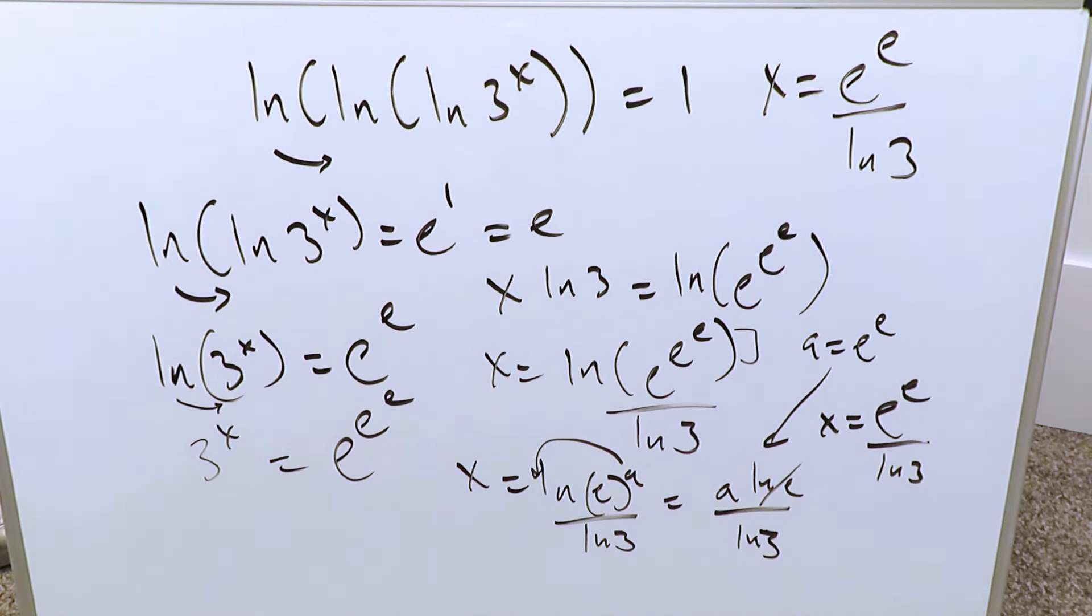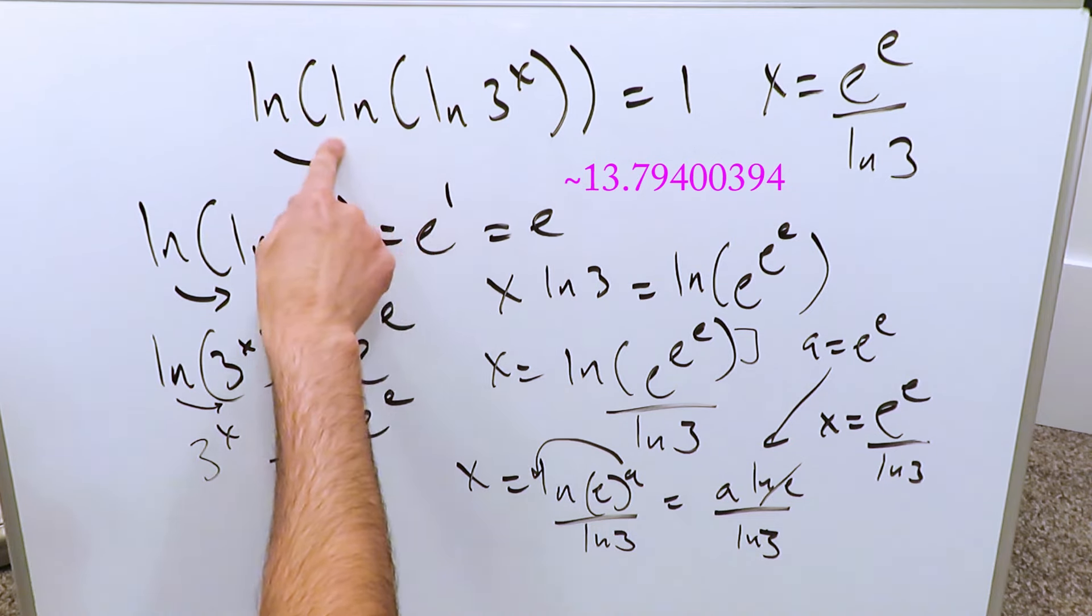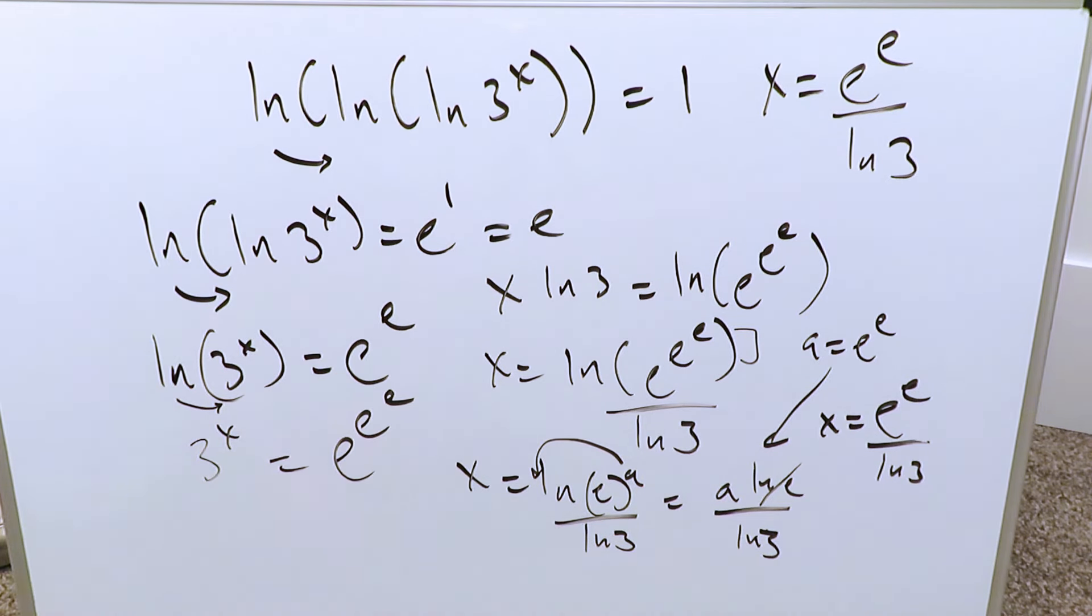And that should be right. You can compute that on the calculator. Just do e exponent e on your calculator divided by natural log 3. Plug that value in here. Do this computation, and you for sure will get equal to 1. And it will be right. This answer here is good. Thank you. Have a good day.